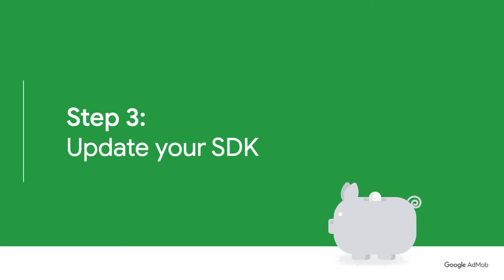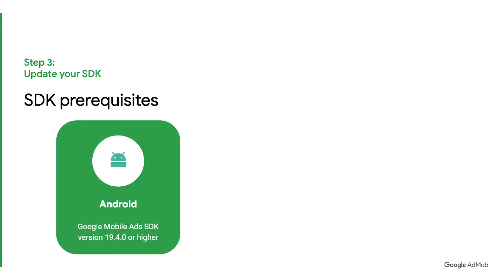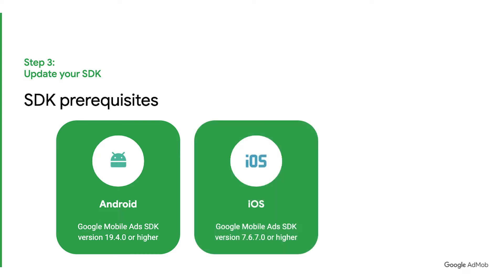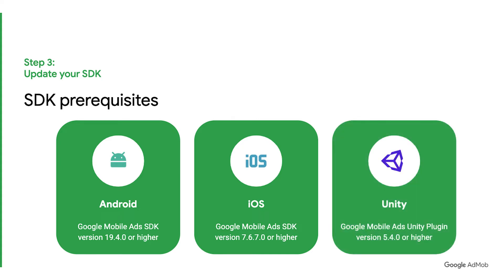Step 3: Update your SDK. Before you can implement rewarded interstitials in AdMob, there are some SDK prerequisites. For Android developers, ensure that your Google Mobile Ads SDK version is 19.4.0 or higher. For iOS developers, 7.6.7.0 or higher. For Unity developers, 5.4.0 or higher.